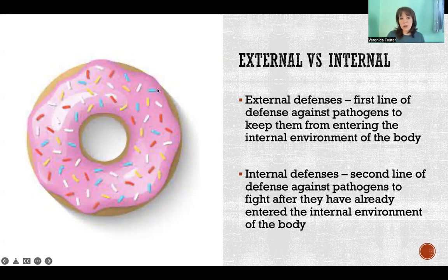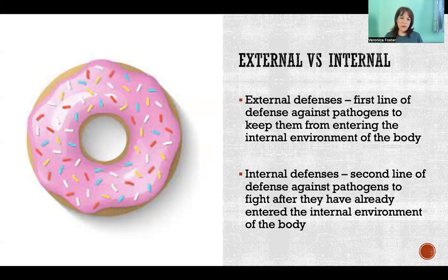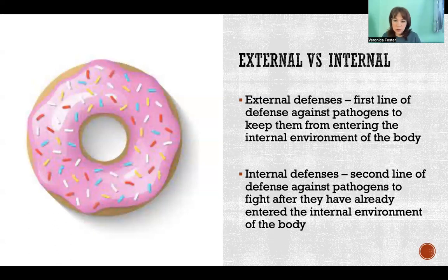I like to use a donut as a good way to illustrate this point. The digestive tract is a series of tubes that goes all the way from the mouth to the anus — it's one long tube that is open to the outside environment on both ends. Everything contained inside of that tube is still considered to be part of the external environment. It is not internal to the body until something is absorbed from that digestive tract, goes through the wall of whatever organ — small intestine, large intestine — goes through that wall and is taken up into the blood and lymph. Now it is considered the internal environment of the body.